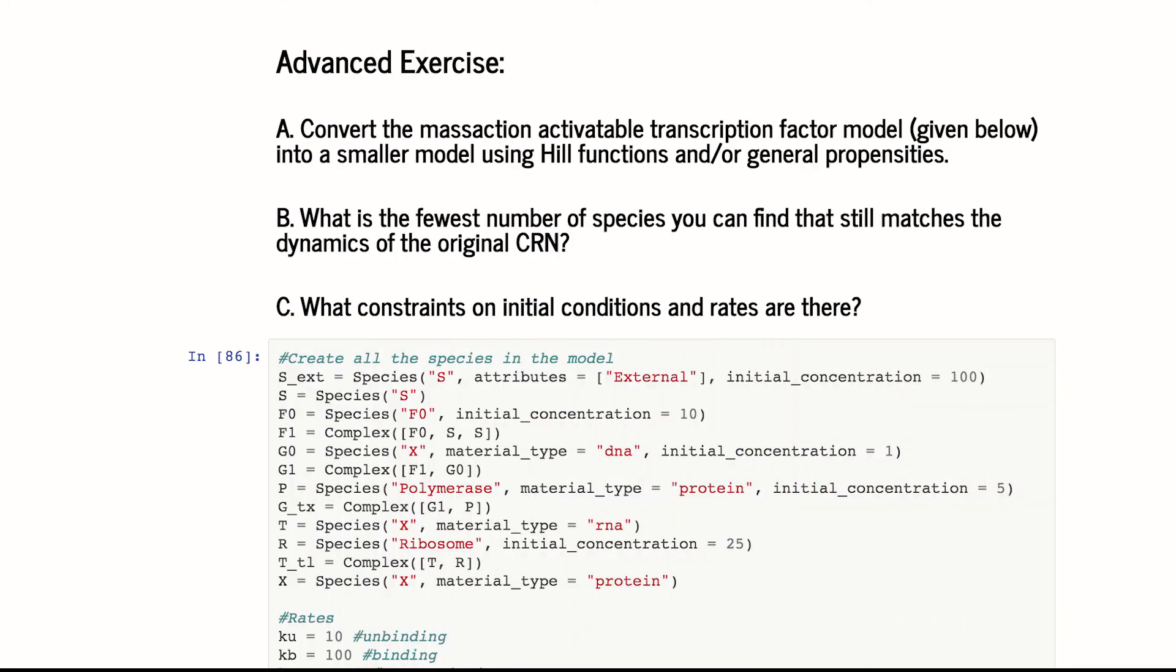And finally, if you're an overachiever and want a more advanced exercise, I've created that model I showed you of the signal binding to the transcription factor, binding to the gene, et cetera, as a mass action model. And a challenge is to see what is the smallest you can make the model. So how many hill function reductions can you use and make it so it still matches the original dynamics of the CRN? And maybe there's constraints on the initial conditions and rates to make that possible. So this is kind of an open-ended question. I have a big model with many species and many reactions. Can you simplify it dramatically? And how much so?